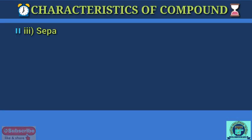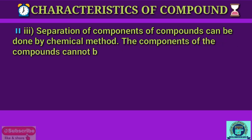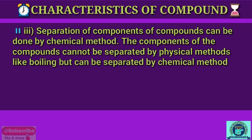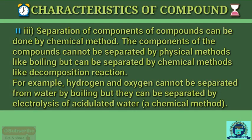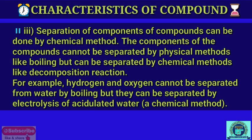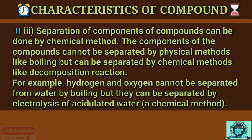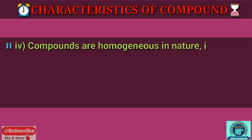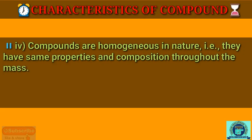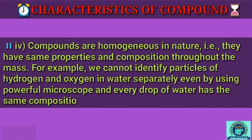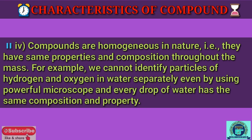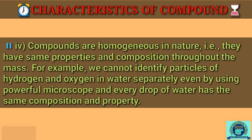The composition of iron sulfide remains 7:4 even if more iron and sulfur are reacted. Third, the components of a compound cannot be separated by physical methods like boiling, but can be separated by chemical methods like decomposition. For example, hydrogen and oxygen cannot be separated from water by boiling, but they can be separated by electrolysis of acidulated water. Fourth, compounds are homogeneous in nature — they have the same properties and composition throughout, and every drop of water has the same composition.